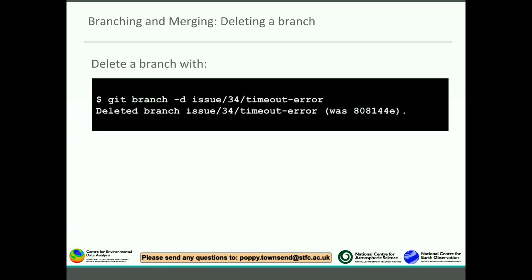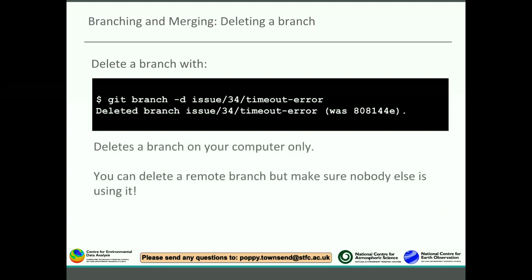When you finish with a branch - either you've merged it or you want to backtrack - you can use git branch -d followed by the branch name to delete it. Note that this only deletes the branch on your local computer. It is possible to run a command to delete the branch from GitHub at the same time, but you want to make sure no one else is using it - that command is available online if you need it.